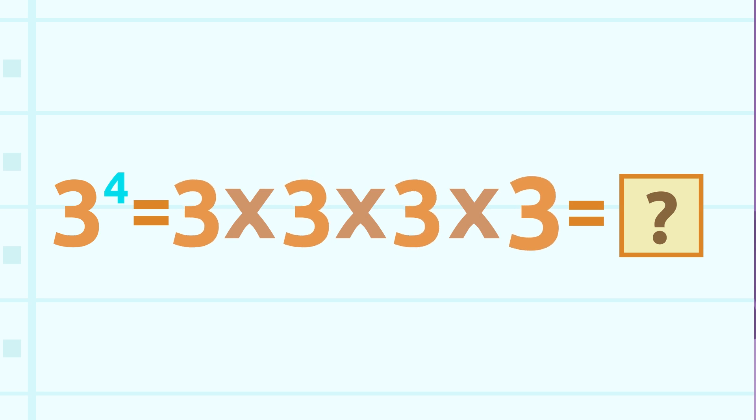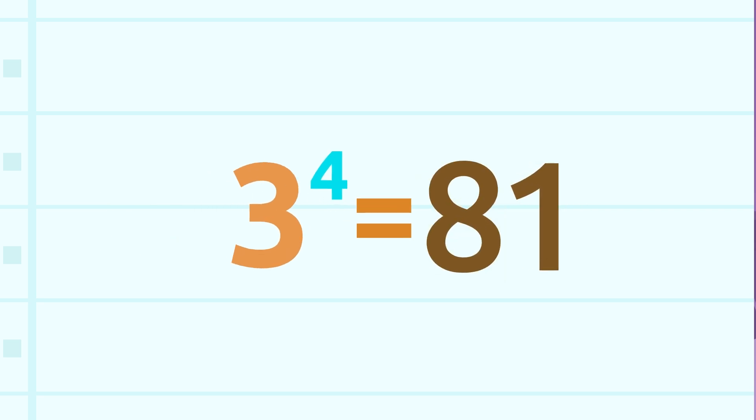Let's look at the result: three times three times three times three equals... hmm, maybe it's better to multiply separately. Three times three is nine, nine times three is twenty-seven, and twenty-seven times three is eighty-one. Awesome. Three to the power of four is eighty-one.